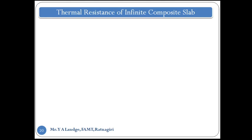Up until now we looked at a single cylinder, single slab, and sphere. Now, when we have a composite slab or composite cylinder, we are adding another material to wrap that particular wall, cylinder, or sphere. In industry, when there is piping carrying steam or hot or cold liquid, we don't want to lose heat from the pipe. In such cases we add insulation — layers of different materials — and since different materials have different thermal conductivity, the heat transfer rate differs. So when wrapping one, two, or three layers of different material we try to reduce the heat transfer rate.